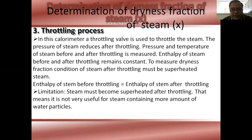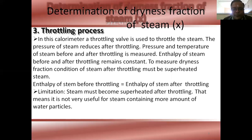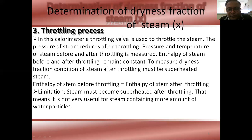The throttling calorimeter is one in which the steam is throttled. After throttling, the pressure of the steam is reduced. The pressure and temperature of steam before and after throttling are measured. The enthalpy of steam before and after throttling remains constant, since throttling is a constant enthalpy process.